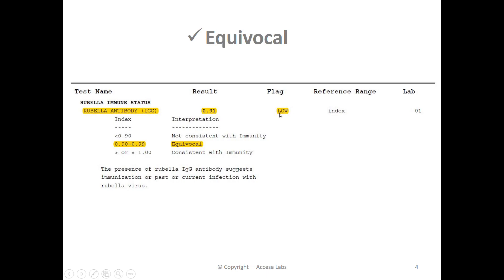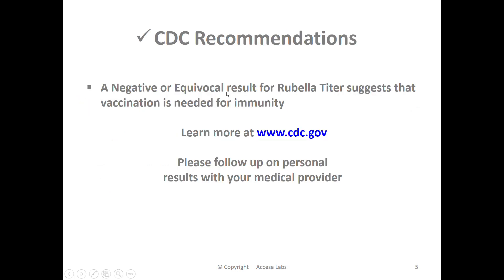Now we will review an equivocal result. As shown here, any result between 0.90 and 0.99 is equivocal, which means that the result is neither negative nor positive. Based on CDC recommendations, a negative or equivocal result for rubella titer suggests that vaccination is needed for immunity.